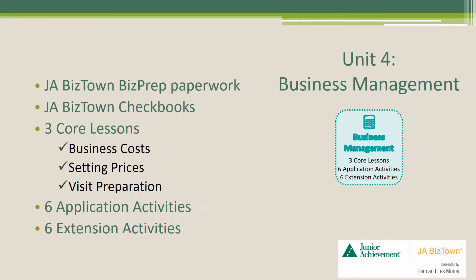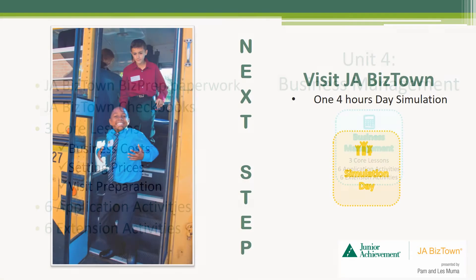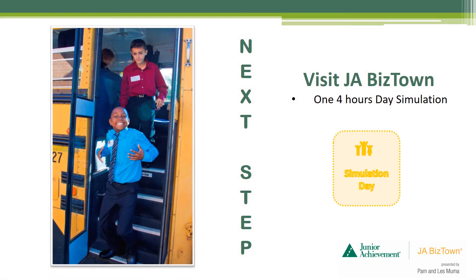Unit 4, Business Management. During this unit, the students will learn the key factors in operating a business in order to prepare for the JA BizTown visit. This unit includes your JA BizTown BizPrep paperwork, JA BizTown checkbooks, three core lessons, six application activities, and six extension opportunities you can choose from. After you have delivered all of the in-class lessons, the next step is to visit JA BizTown for the simulation portion of the curriculum. Your visit to JA BizTown will be about four hours, and there will be more detailed instructions for preparing specifically for this part.